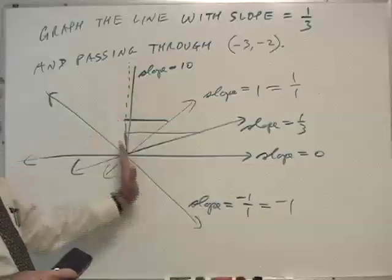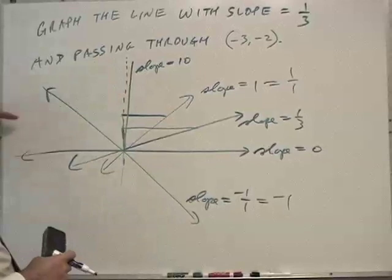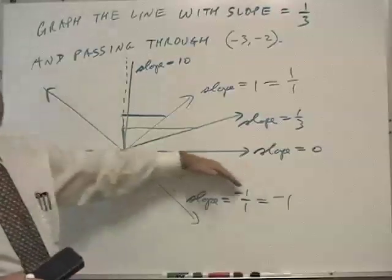Similarly, if it's a very steep decreasing slope, it's going to be a larger negative number. If it's a very shallow decrease, it's a smaller negative number.